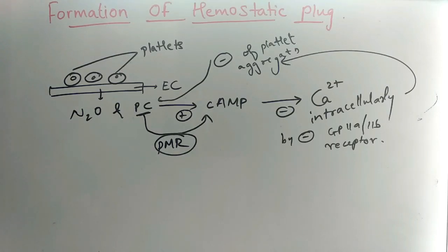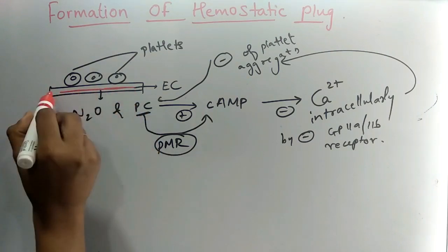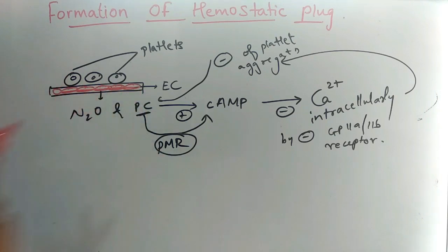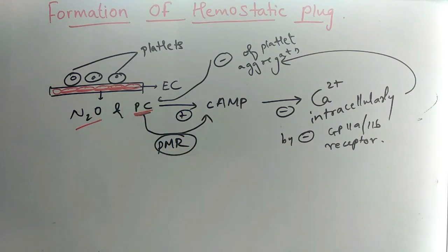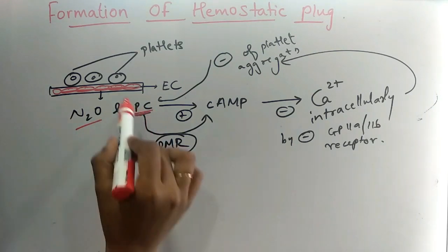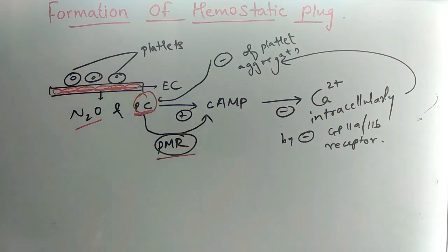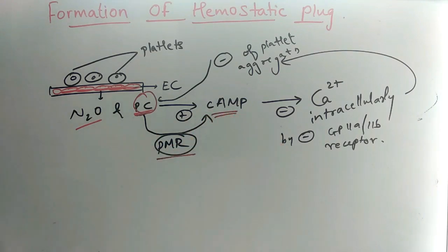Today we are going to see formation of hemostatic plug. The endothelial cell, when intact, releases nitric oxide and prostacyclin. These bind to plasma membrane receptors, and this binding leads to the synthesis of cyclic AMP.